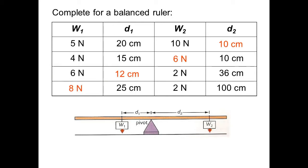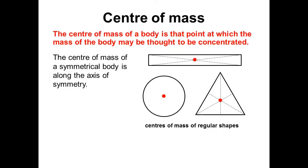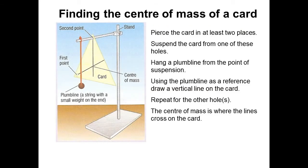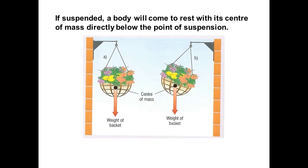The center of mass is the point at which the mass appears to be concentrated. For regular-shaped objects it's simply the center of the shape. For irregular shapes, hang it from any point, draw a plumb line downward, and where the lines cross is the center of mass. This matters for stability: a hanging basket tipped to one side will rotate back to the stable position because the weight acts through the center of mass.